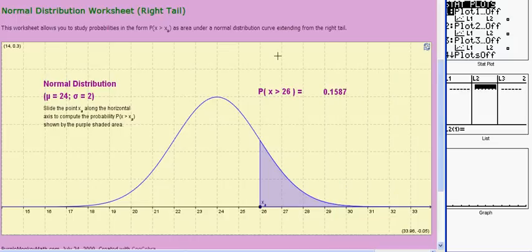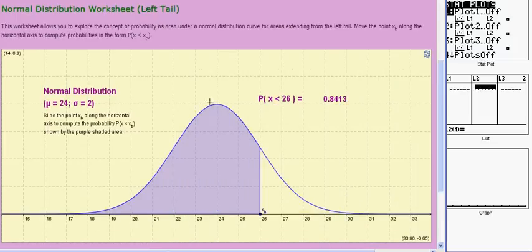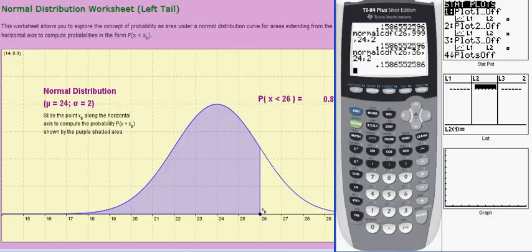The same thing applies when you have a probability extending out into the left tail, and that would be a situation where x is less than some value. And again you would use a value extending out in the tail, either negative 999, or in this case 12 would be far enough away into the left tail to compute the probability accurately. Okay, so that's the second type of example I wanted to demonstrate.